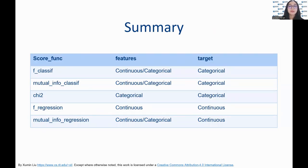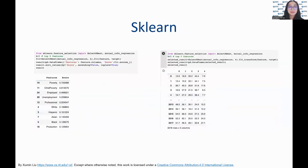Here we have a summary of the methods used for feature selection depending on the data types. We can also use a machine learning library such as scikit-learn to perform feature selection on our dataset.